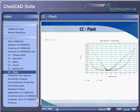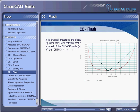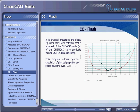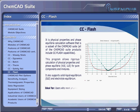CC Flash. It is physical properties and phase equilibria calculation software that is a subset of the ChemCAD suite. All ChemCAD suite products include CC Flash capabilities. This program allows rigorous calculation of physical properties and phase equilibria — VLE and LLE — for pure components and mixtures. It also supports solid-liquid equilibrium (SLE) and electrolyte equilibrium. It is ideal for users who need physical property and phase equilibrium data, as well as property prediction and regression.